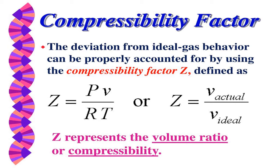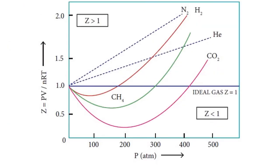The compressibility factor Z is the ability to compress a gas, written as Z = PV_real / V_ideal, or simply Z = PV/nRT. Looking at the Z versus pressure graph for different gases: helium and hydrogen are always above the ideal line (Z = 1) at all pressures — this is called positive deviation. Other gases show negative deviation at low pressures before crossing the ideal line.